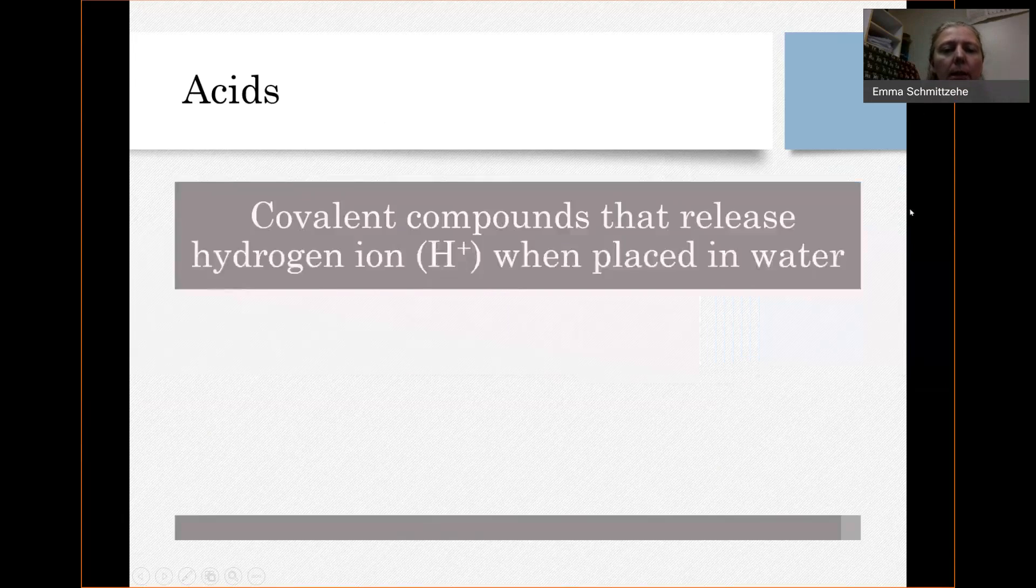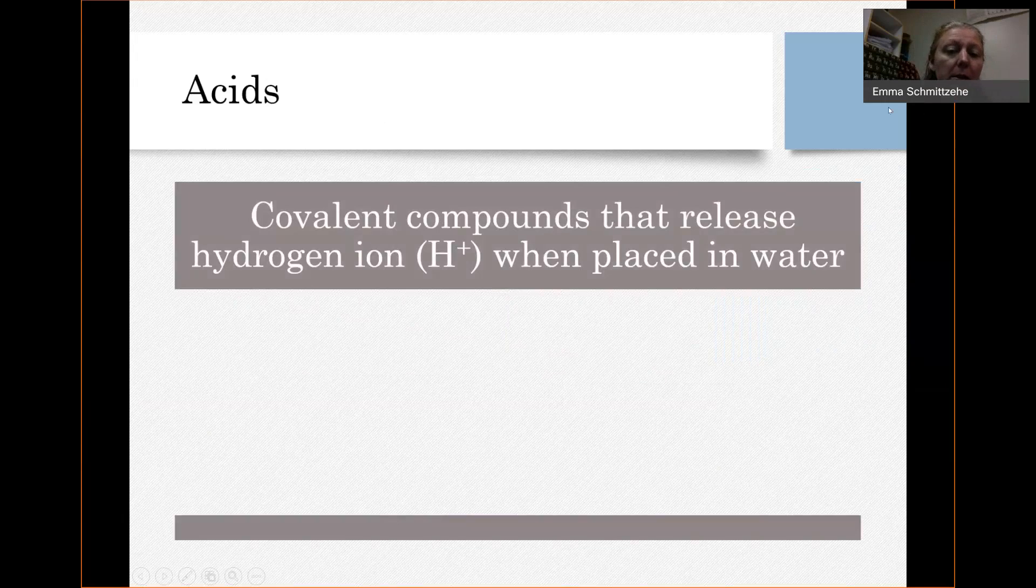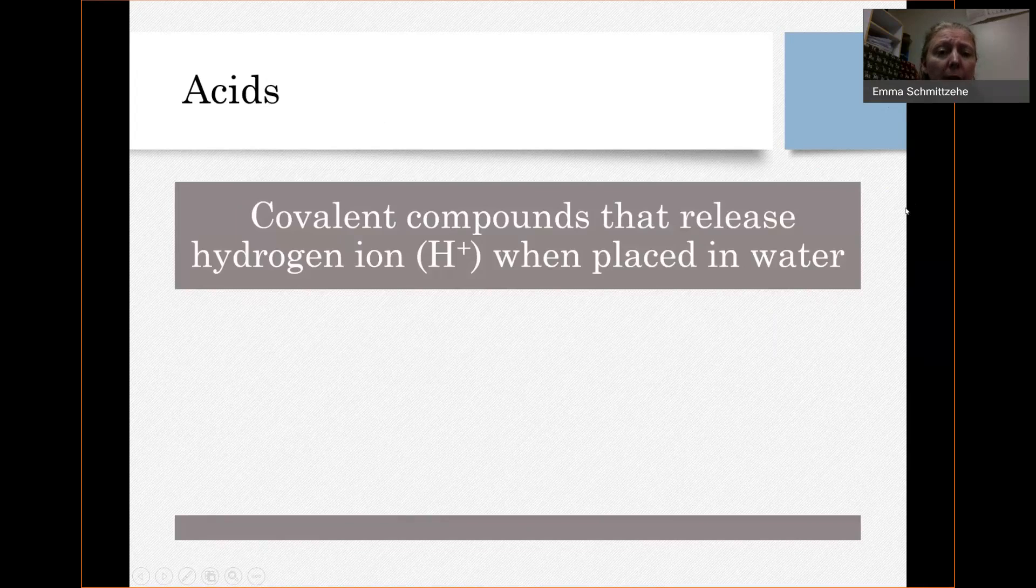An acid is a covalent compound that releases hydrogen ion when it's placed in water. It can be any covalent compound that does this. This is basically a special class of covalent compounds. When these compounds are not in water, they're just considered a covalent compound. It's not an ionic compound that is dissociating into ions when put in solution. It's an actual covalent compound where the covalent bond between the hydrogen and some other atom is being broken or ionized when it's placed in water.